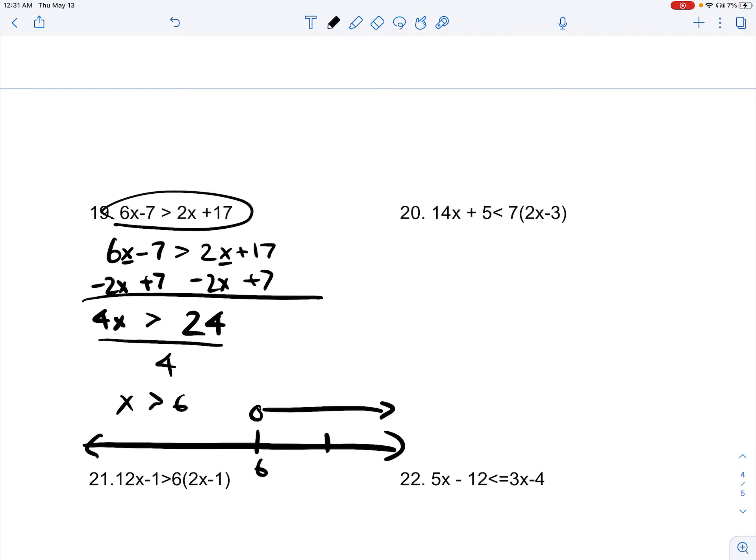So, let's check it out. What about 7? 6 times 7 minus 7 is greater than 2 times 7 plus 17. 7 times 6 is 42. Minus 7 is 35, which is greater than 14 plus 17. That's 31. Is 35 greater than 31? Yes. So, that is true.